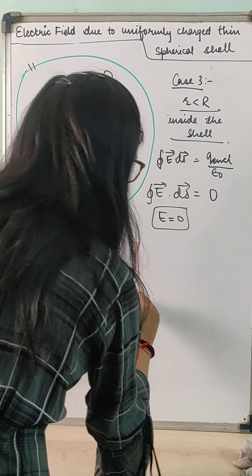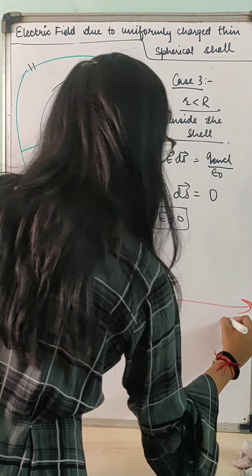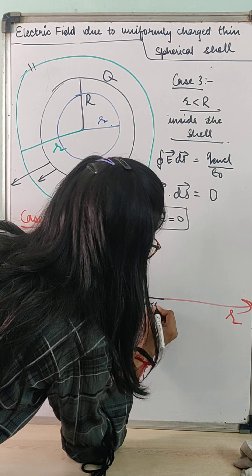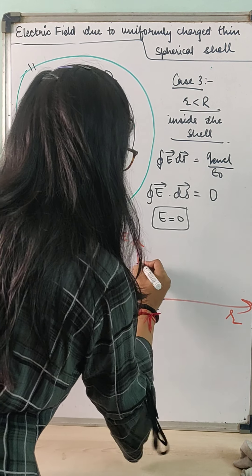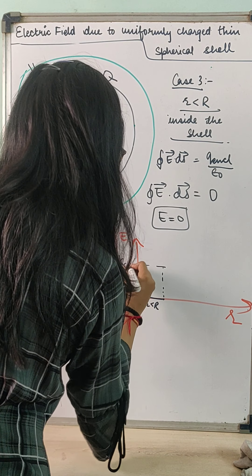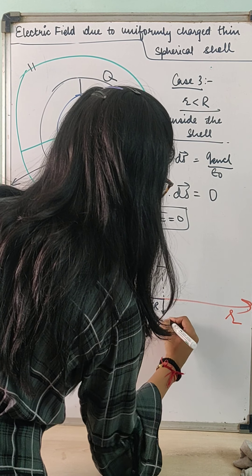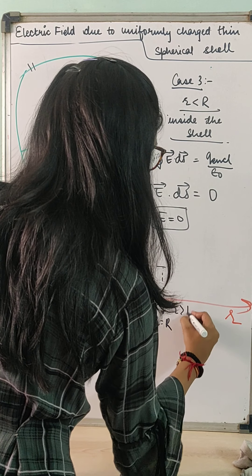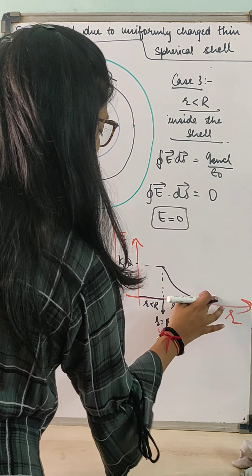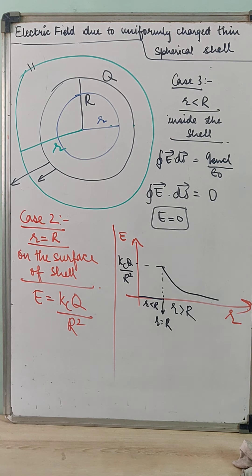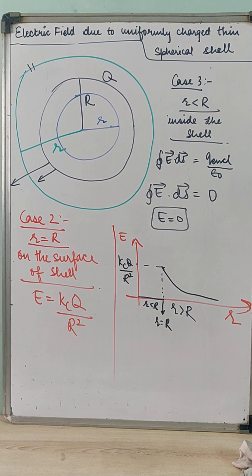If we plot the graph of E versus r, the electric field is 0 for r less than capital R. Then it suddenly increases and becomes Kc capital Q by R squared at the point where r equals capital R. For r greater than capital R, the electric field is inversely proportional to r squared, following a hyperbolic graph. This completes the topic of electric field due to a uniformly charged thin spherical shell, and also completes chapter 1. Thank you everyone.